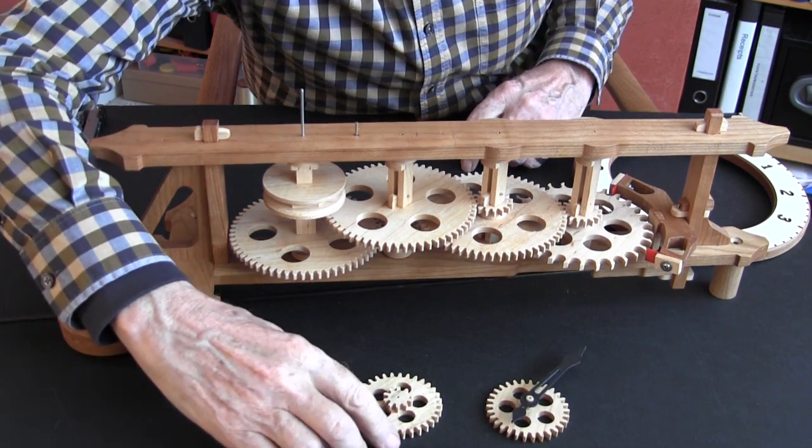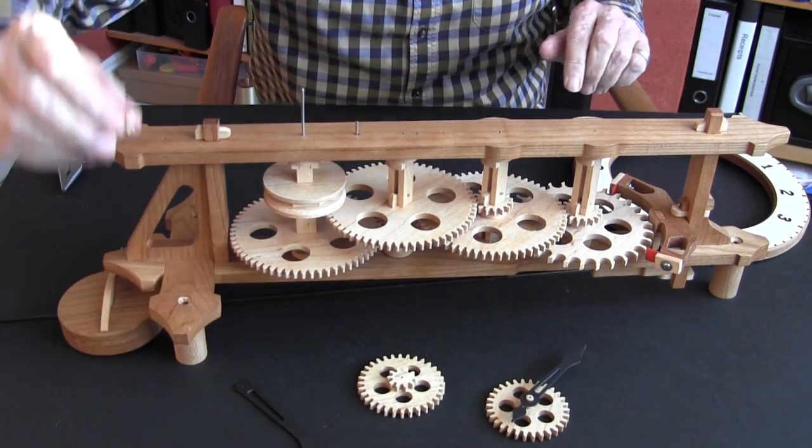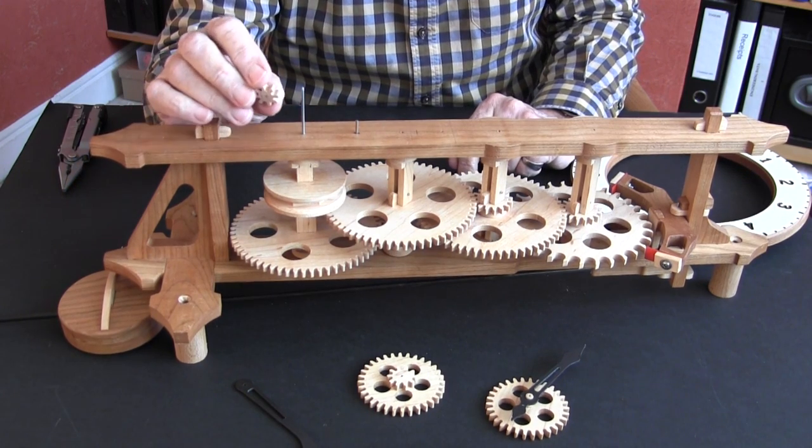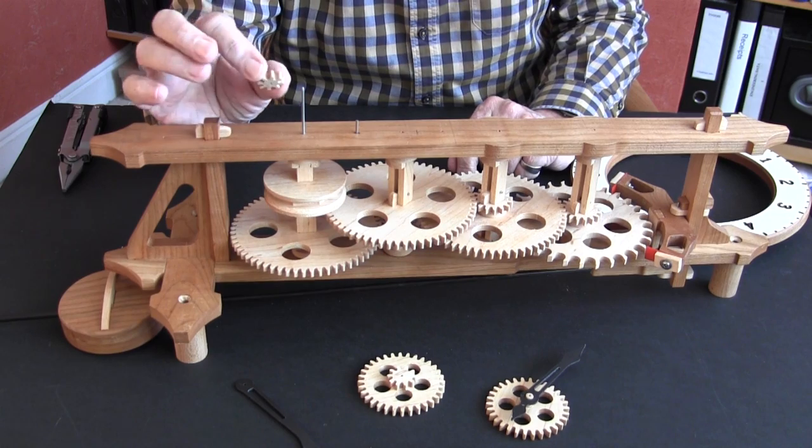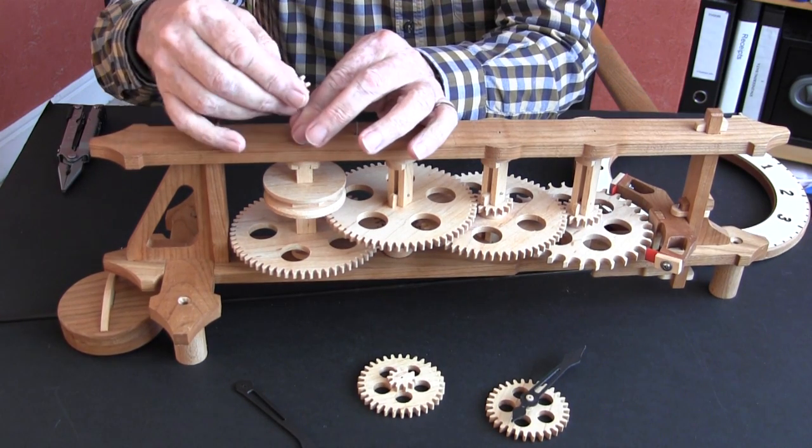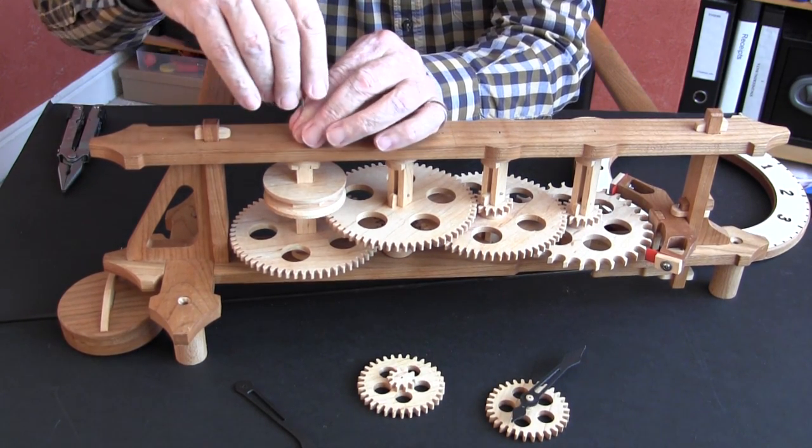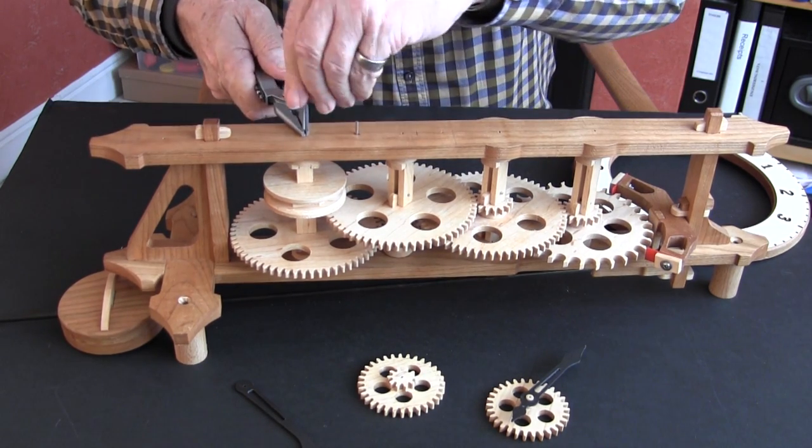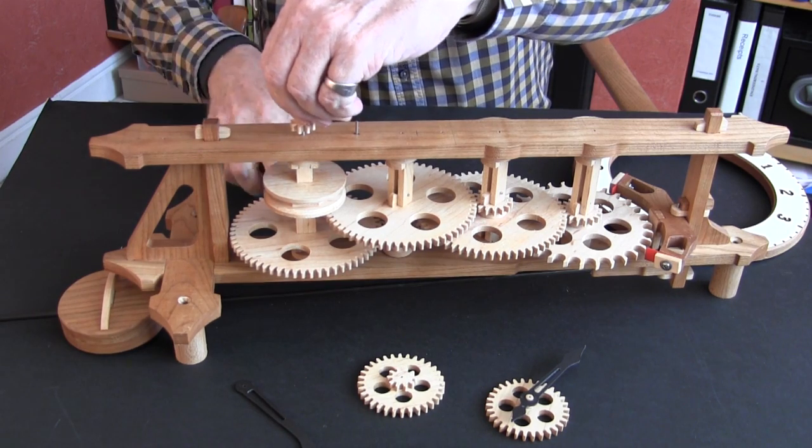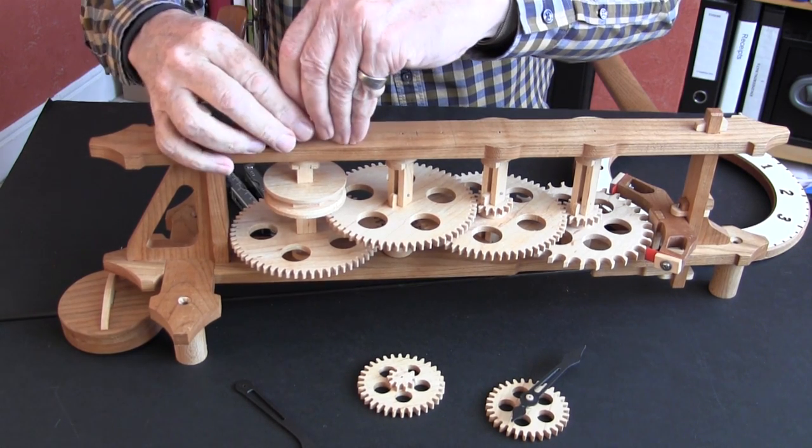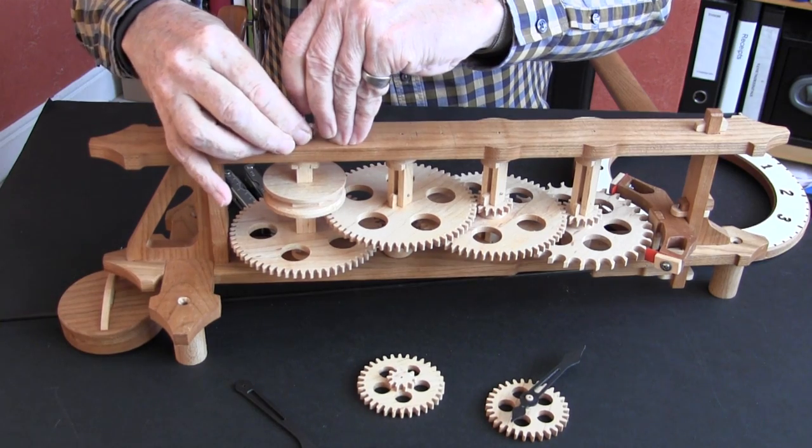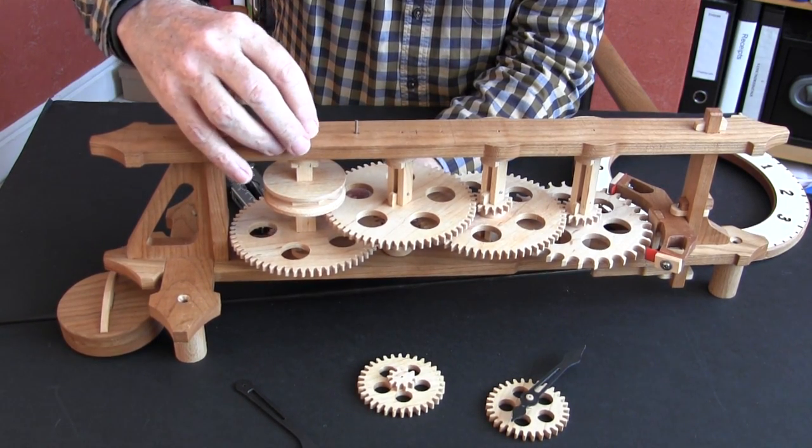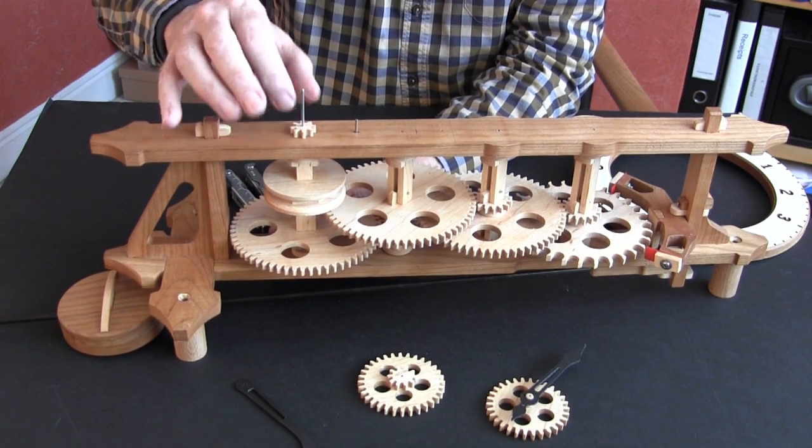Now we're ready to fit the gears onto the shafts. Now this first gear, the small eight toothed gear, fits onto the drive shaft. It's a tight fit. Needs to be a tight fit. Because the drive shaft is going to turn this gear. And it should be positioned so that it's just shy of the surface, so it's free to rotate.